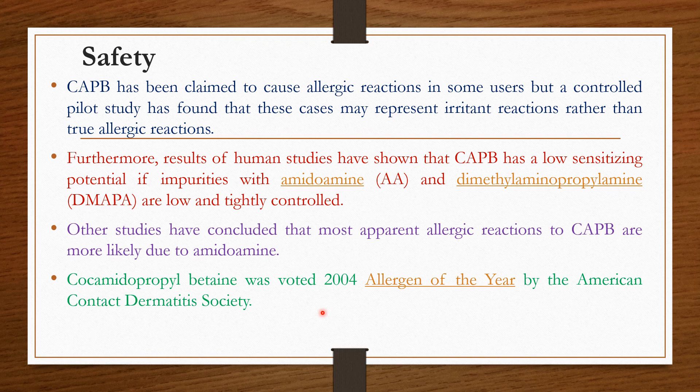Whenever you buy cosmetic products, check what surfactants are involved — whether for body wash, toothpaste, cleaning, shampoos, or conditioners — because they may be present not just as SLS or CAPB but under many alternative names. Being aware of these helps you understand the potential harms and allergic effects. If you like this video, please like, share, and subscribe to the channel.